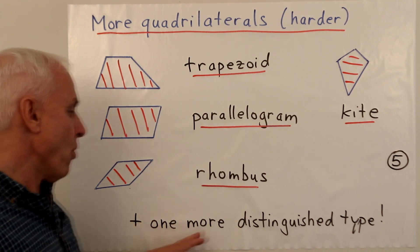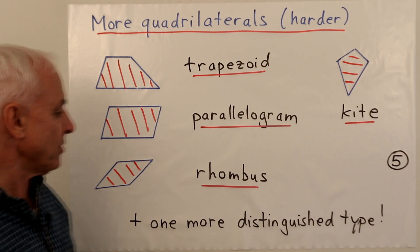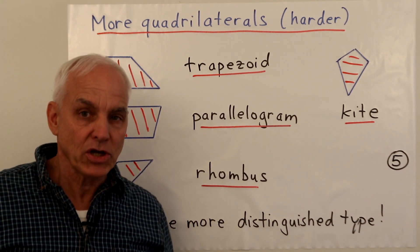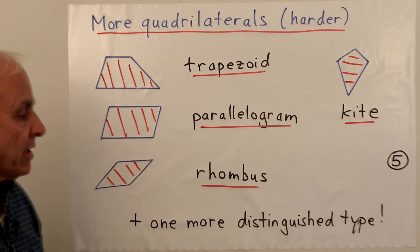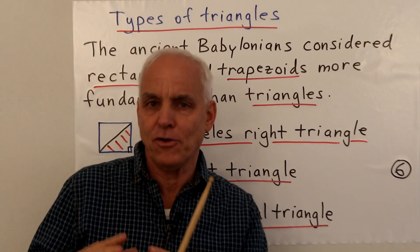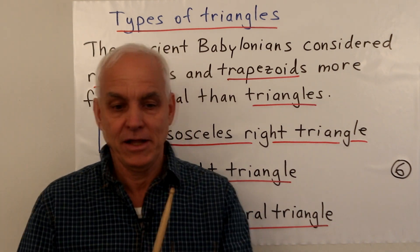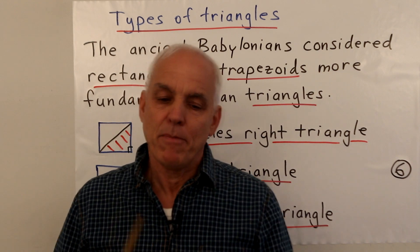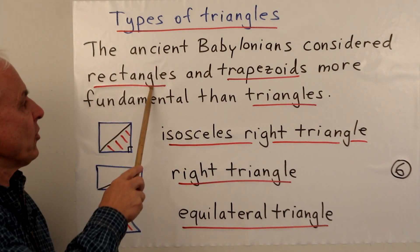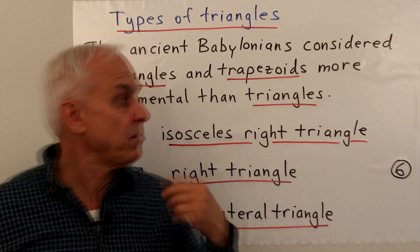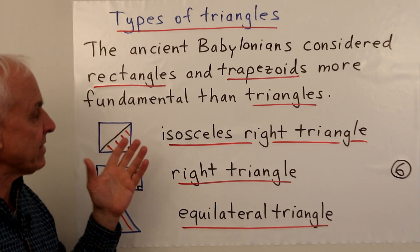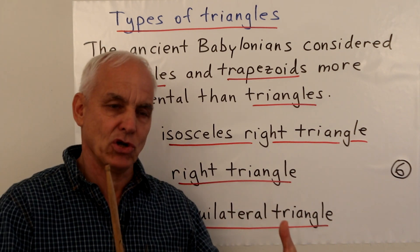There's actually one more rather common distinguished type — I'll leave you to guess what that might be. The family of quadrilaterals is actually quite rich with a lot of interesting things to explore. Now, people trained in classical Greek geometry might think that triangles are the natural starting point, then quadrilaterals, then pentagons and so on. But if you go back to an earlier tradition — that of the Babylonians — you find that the ancient Babylonians considered rectangles and trapezoids to be more fundamental than triangles.